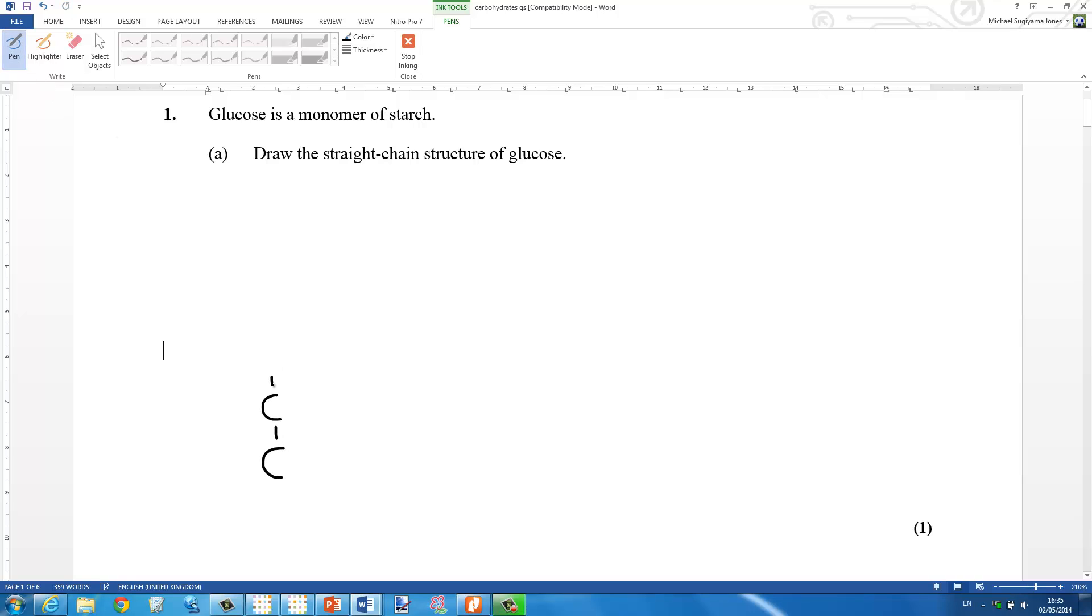Let's start with the straight chain structure of glucose. This is something you need to memorize. We have the aldehyde group on the end, it's called an aldo-sugar, and the OH groups we have 1, 2, 3, 4, 5, and they need to be on the correct sides as you see them in this diagram.